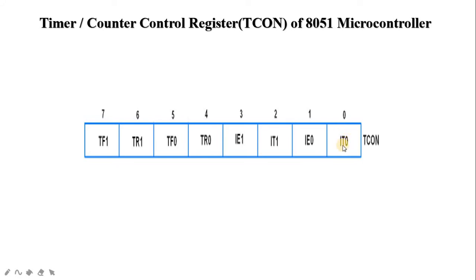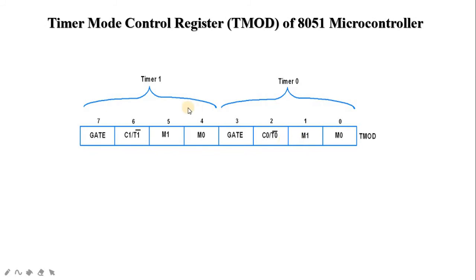The TCON register is bit-addressable from TCON bit 0 to TCON bit 7. The next topic is the timer mode control register — the TMOD register. All counter or timer actions can be controlled by bits in the timer mode register.